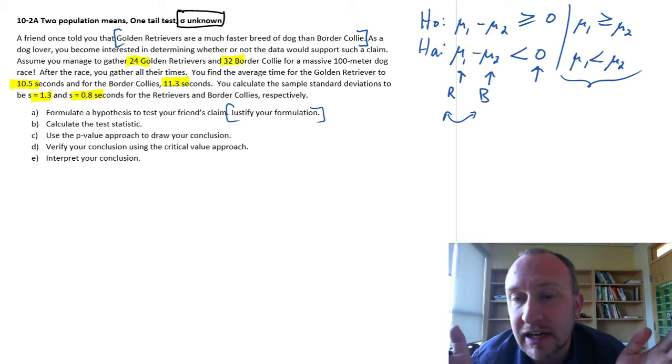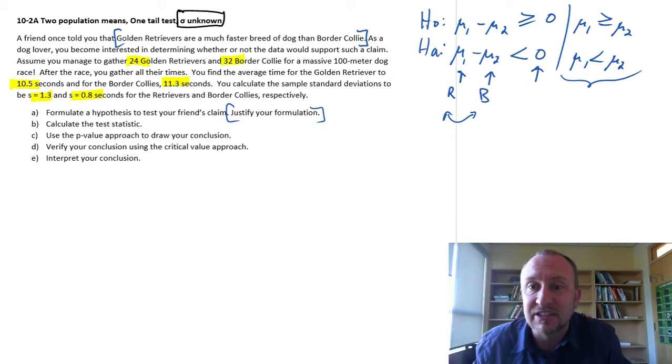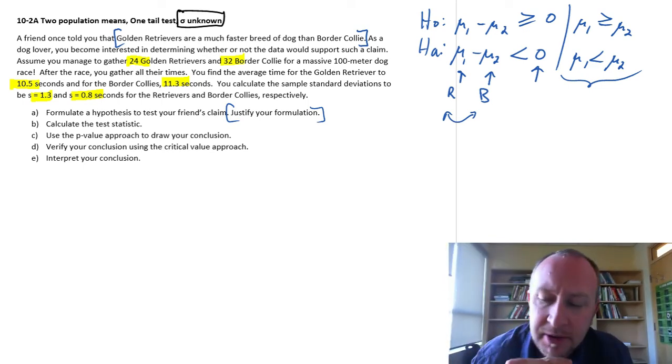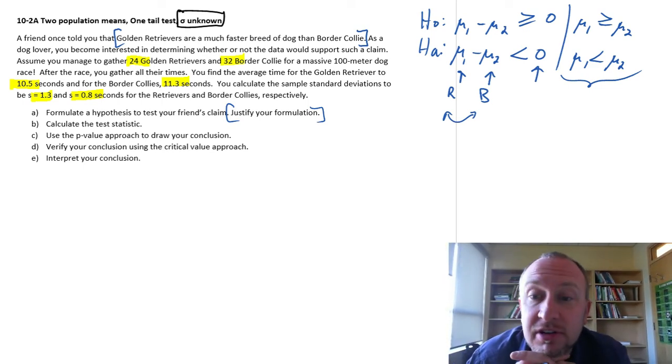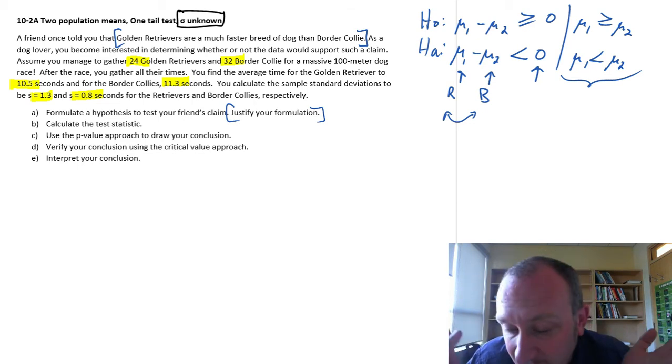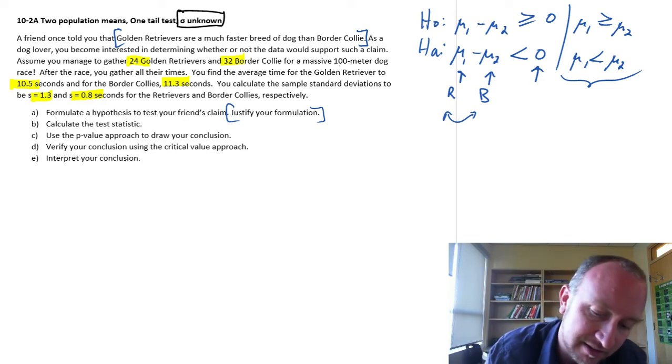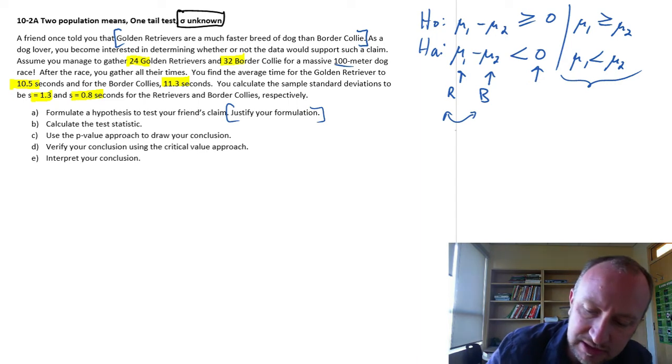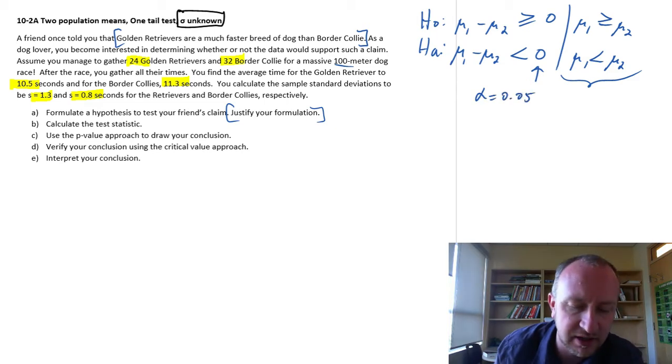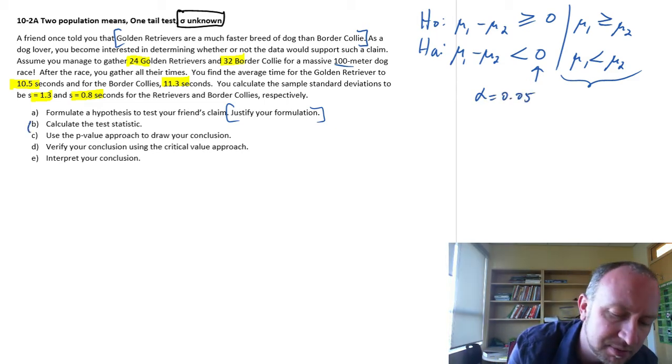Or alternatively I can say that the border collies are at least as fast as the golden retrievers. And if the evidence supports the alternative hypotheses then I can support my friend's claim that yeah it sounds as though on average retrievers are faster breed of dog. At least in this 100 meter race. So let's move on. We'll do this test. Lack of information given we'll do it at 0.05 level of significance.